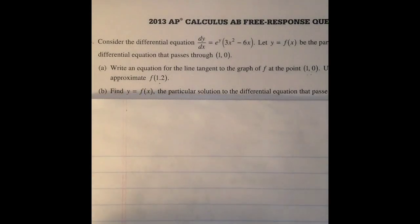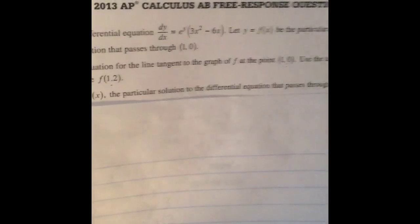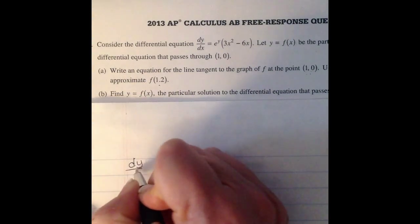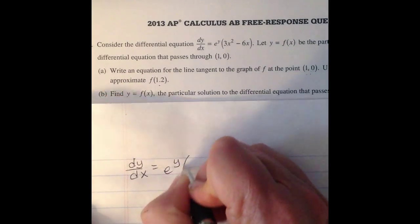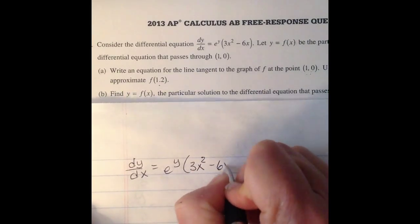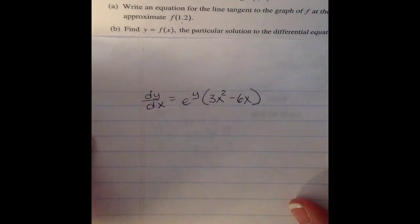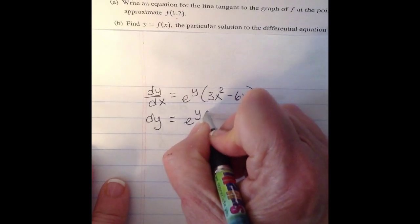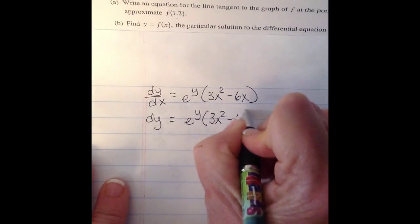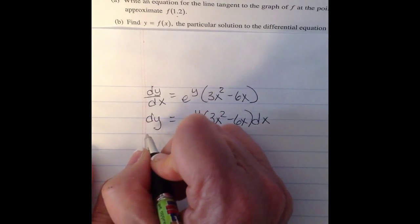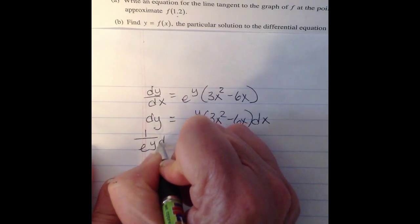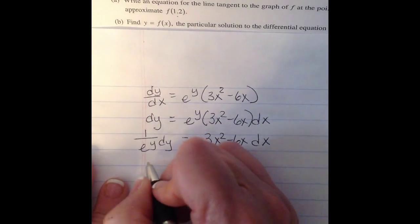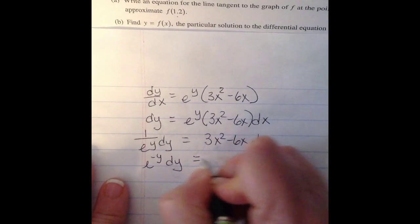Now let's do part (b). It says find y = f(x), the particular solution to the differential equation that passes through (1,0). So the first thing we want to do is to separate our variables. So let me write the problem. Okay. So first thing I want to do is multiply both sides by dx. So if I do that, then I'm going to divide the e^y to the other side.